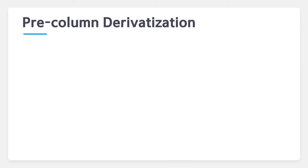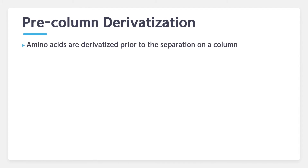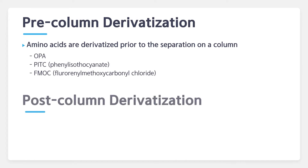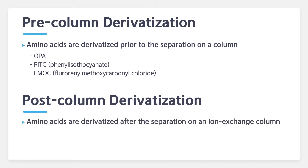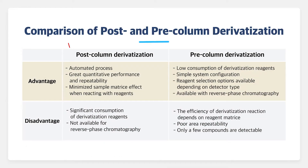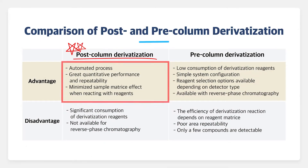It's also categorized based on where derivatization occurs. Pre-column derivatization is that amino acids are derivatized prior to the separation on a column. Post-column derivatization is that amino acids are derivatized after the separation on an ion exchange column. The post-column derivatization provides great quantitation and repeatability, while minimizing sample matrix effect.